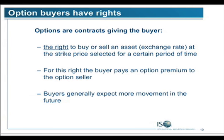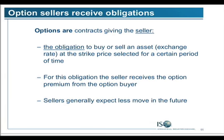Rights and obligations: the buyer has rights, the seller has obligations. Buyers pay premiums, sellers are targeting income. Buyers expect more movement, sellers expect less movement. The seller is targeting income, they're getting an obligation, and they're going to receive a premium. Sellers are expecting less movement in the future.